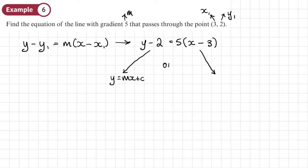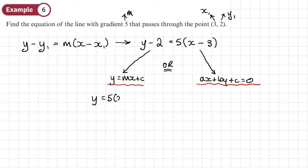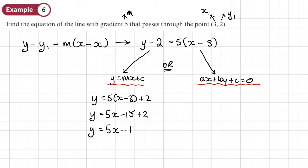You would just do one or the other. For the y equals mx plus c form, we add 2 to both sides and expand the brackets: y equals 5x minus 15 plus 2, so y equals 5x minus 13. That would be our y equals mx plus c answer.